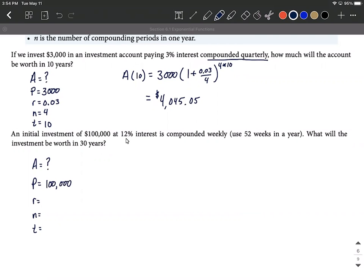Our rate goes with this percentage but we move two decimal places over to the left, so 0.12. Our number of compoundings is compounded weekly, so 52 weeks per year. Our time frame is 30 years.